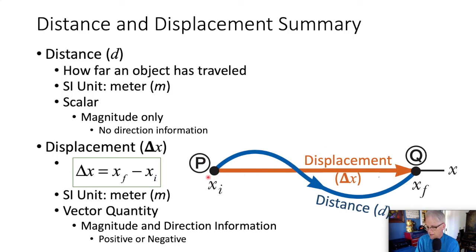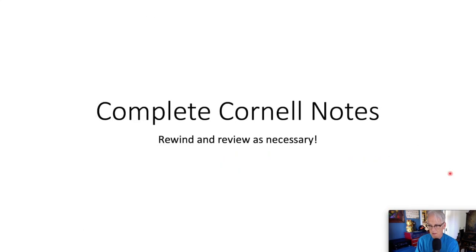In our example here, we went from P to Q. If we call to the right positive, this is a positive displacement.